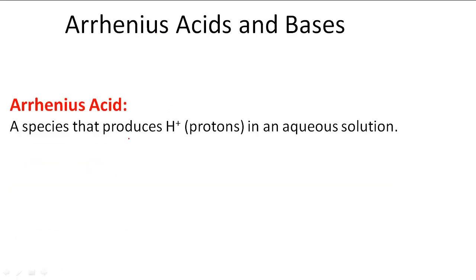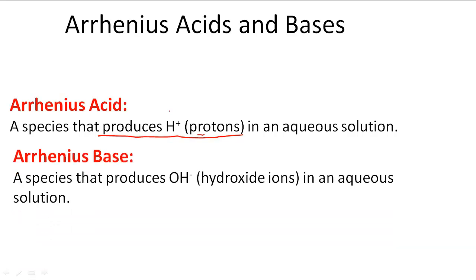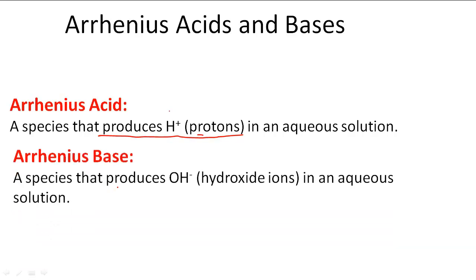An Arrhenius acid is a species that produces H+ (protons) in an aqueous solution. An Arrhenius base, on the other hand, is a species that produces OH- (hydroxide ions) in an aqueous solution.